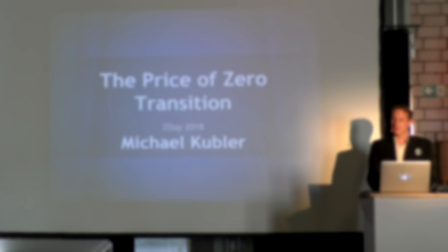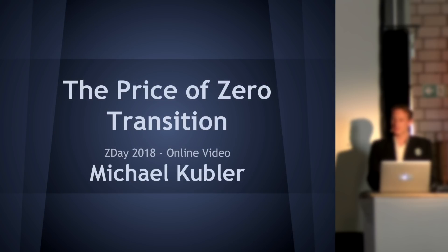Hello. Today I'll be talking about the price of zero transition. This is a way we can get to an abundant society where at least the necessities of life are free to everyone on the planet. It's a transition approach whereby we are creating sustainable RBE aspiring communities that use automation and systems design to produce an abundance of goods and services, which they sell off for cheaper and cheaper prices whilst expanding and spreading until eventually providing for everyone for free.